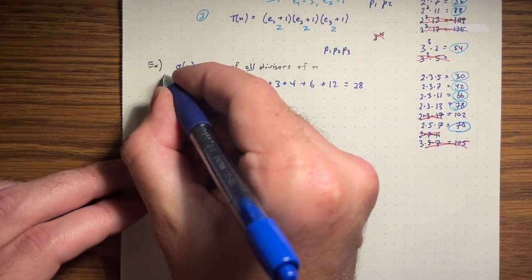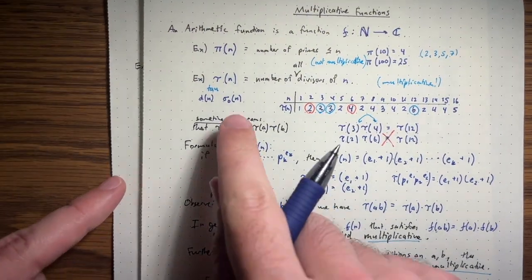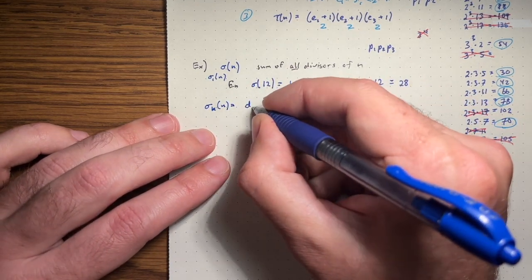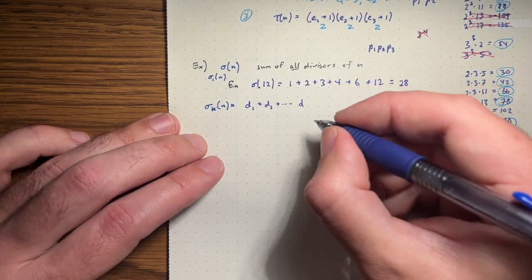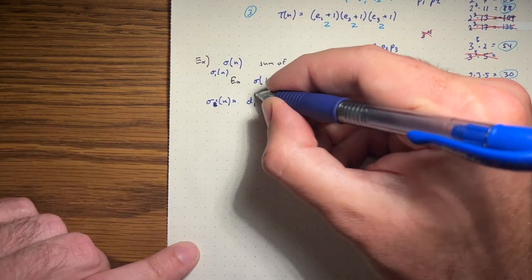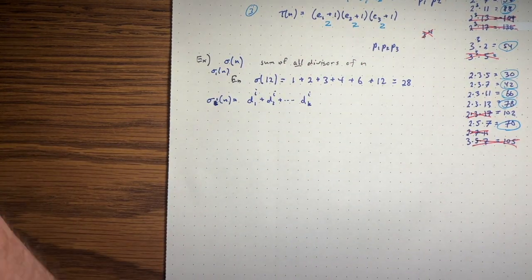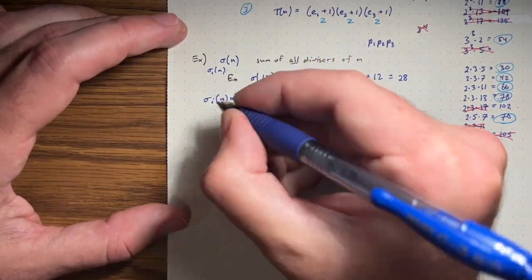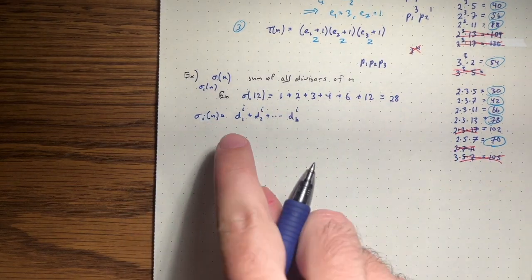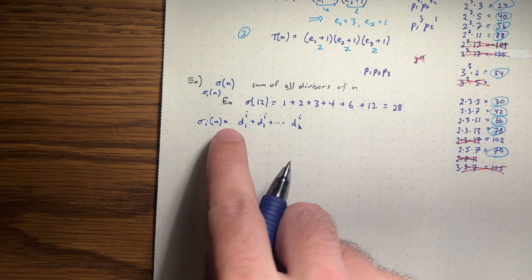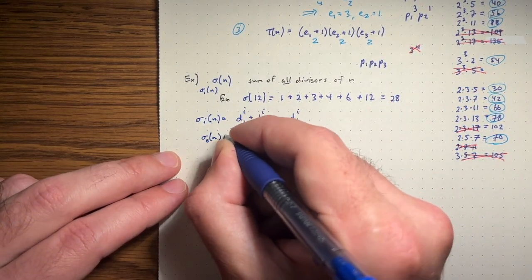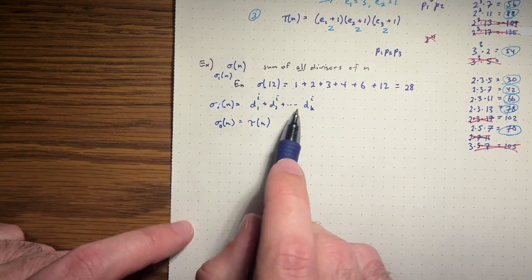We can define more generally sigma_i(n) as the sum over all divisors d of d^i. If i=1 you get the usual sum sigma. If i=0, each divisor contributes 1, so sigma_0(n) is just tau(n) — counting divisors. Sigma_2(n) would be the sum of squares of divisors, etc.